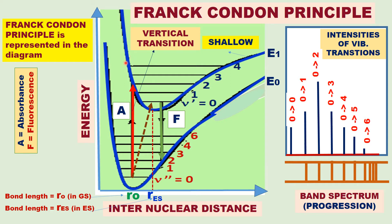Looking at the figure, E1, the excited state Morse curve is shallow, whereas the E0 curve for the ground state is deep, because the ground state is more stable. So the potential energy is minimum for E0. For E1, the potential energy is not very minimum because it is unstable — it is shallow.